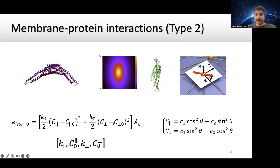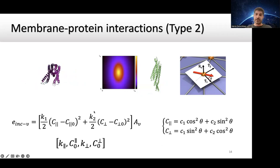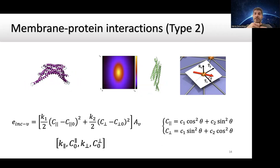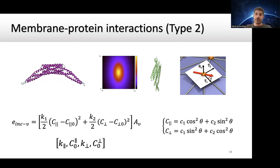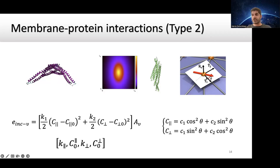So the protein prefers a specific shape, and deviation from that shape costs energy. All the model parameters have physical meaning. Another type is like BAR domain proteins that induce an elongated shape - bending the membrane much more in one direction than another. In this case, you need four model parameters. K1 and K2 represent the energy penalty if the membrane does not bend to the amount the protein wants in each direction. Since we have the curvature in each direction, we can obtain curvature in the direction of the protein using the Euler curvature formula.